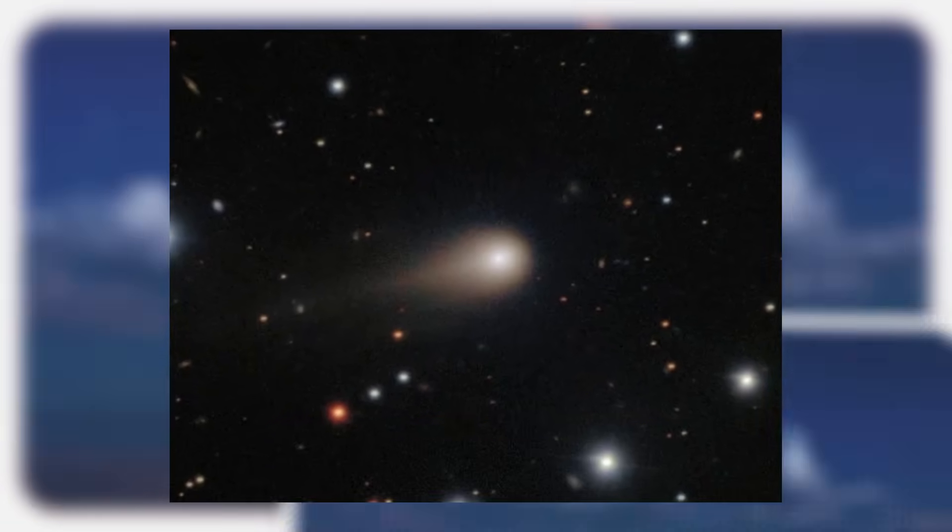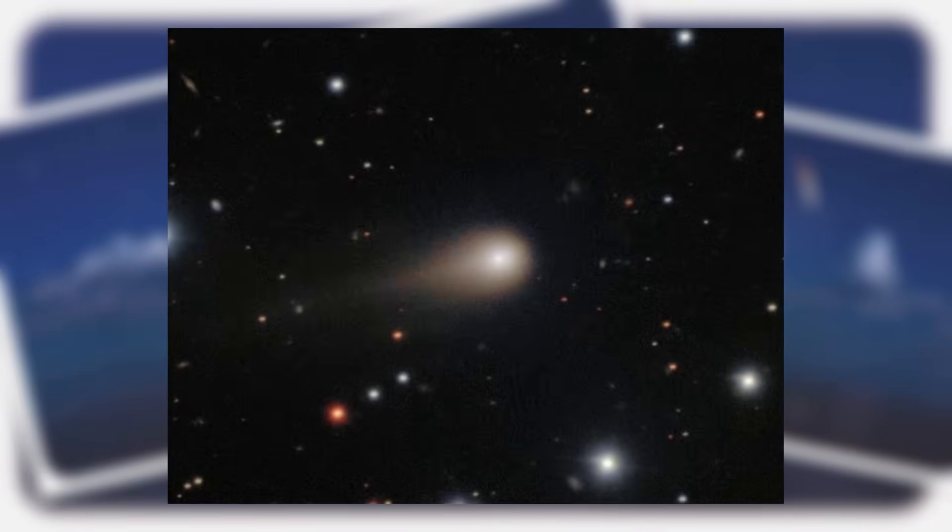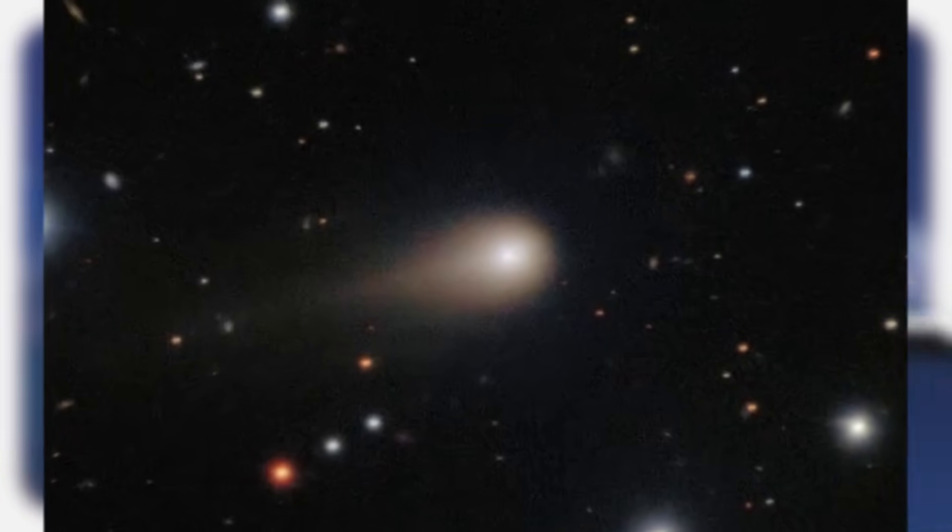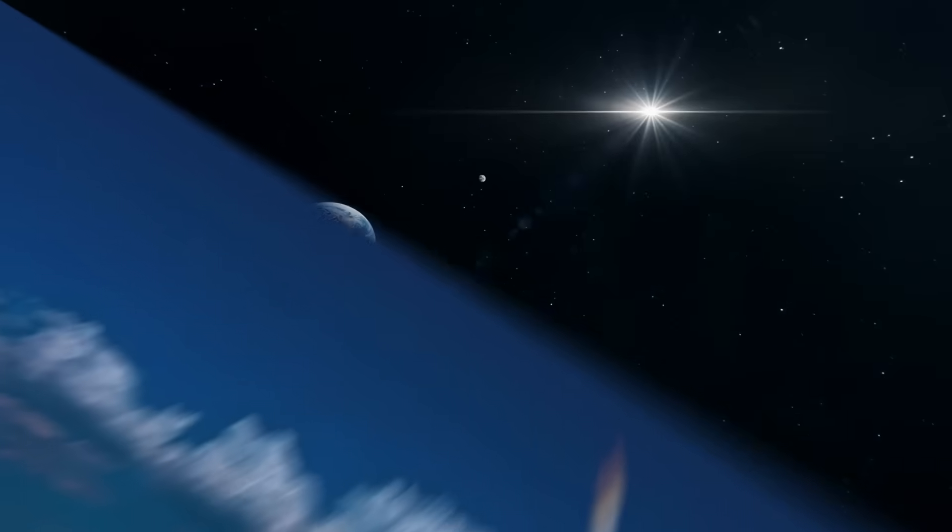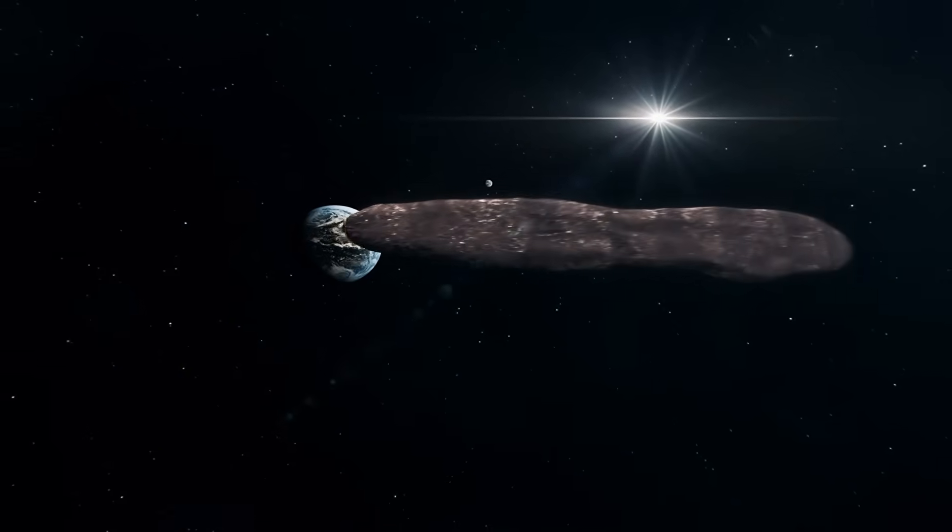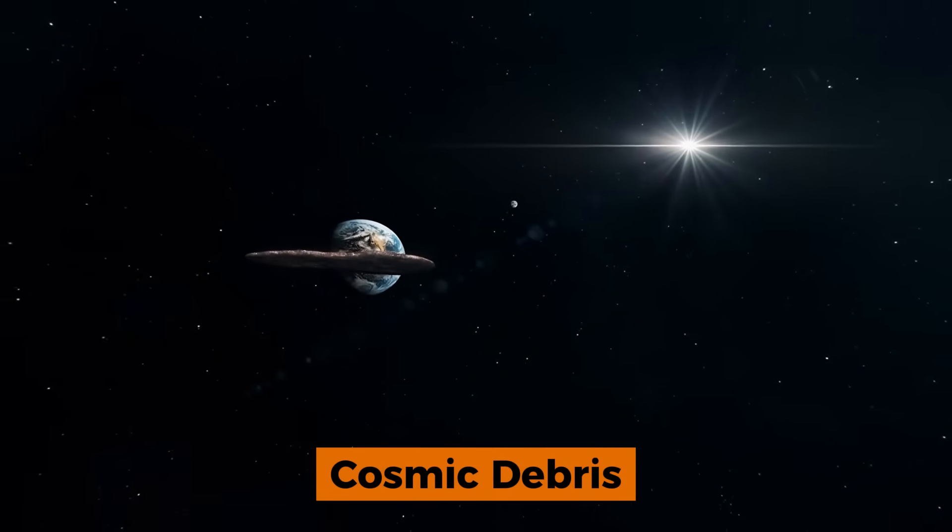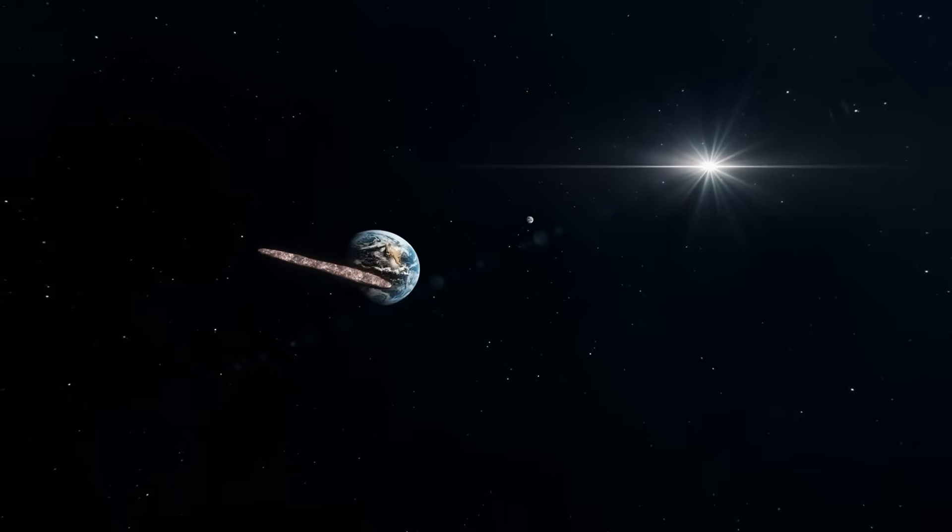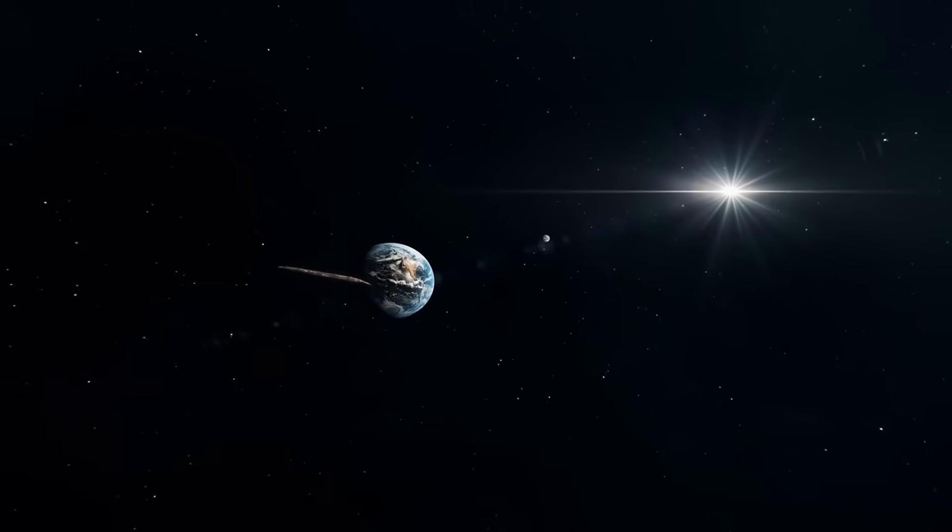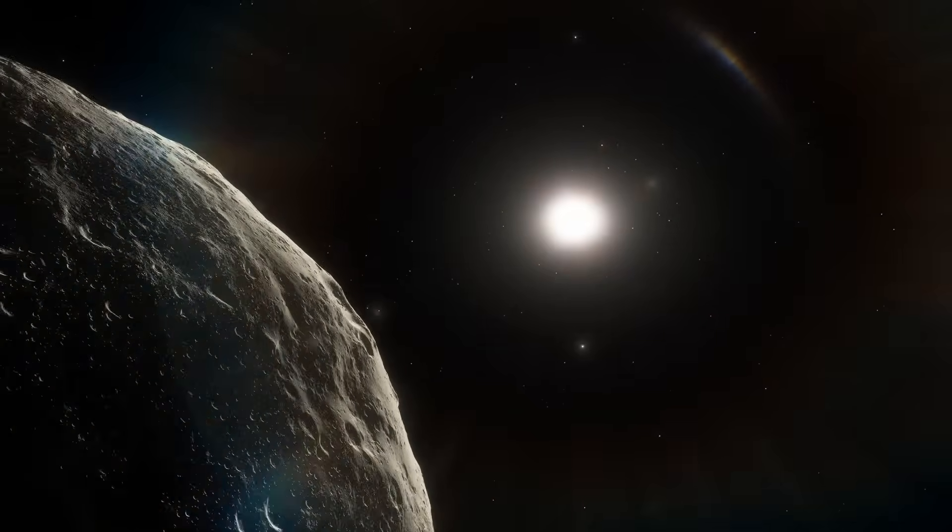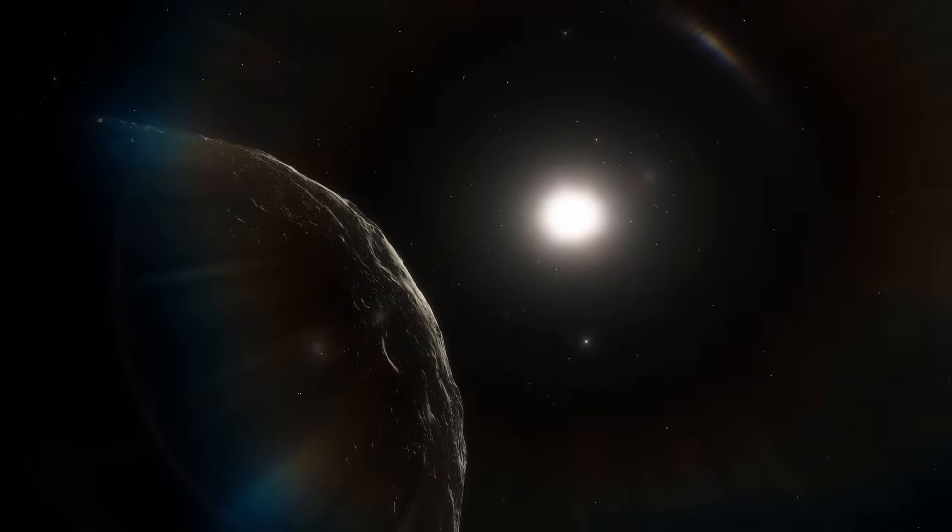The official story was simple: a neat label to contain the inexplicable. It was the third interstellar comet ever detected, a visitor from the unimaginable depths of space, a stray piece of cosmic debris from another star system, offering us a precious, fleeting glimpse into a world beyond our own. But from the very first readings, the story began to unravel.